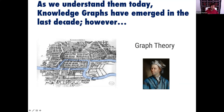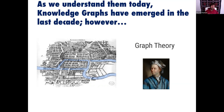The Königsberg bridge problem: the city is divided by a river into seven different regions connected by bridges. The question was — can you start from one region, cross all the bridges, and return without crossing any bridge more than once? Euler showed that you cannot, and he invented graph theory to solve it. What I really like is that it started with problem solving — Euler was trying to solve a real problem, and that tradition has continued in graph theory.